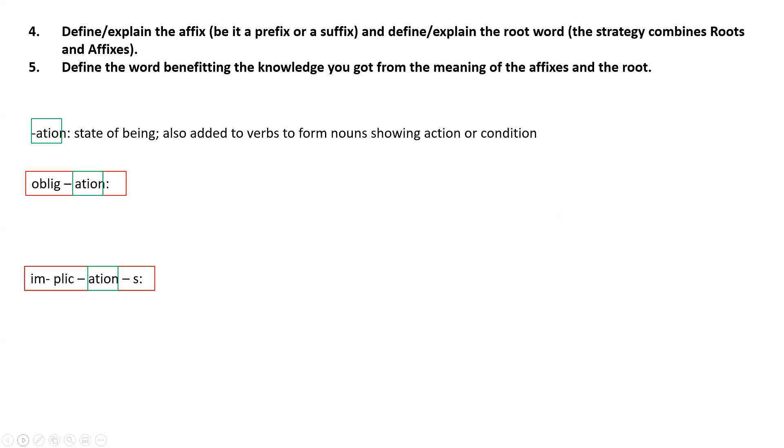So for obligation and implication I use this -ation suffix, and I found that it means state of being or is also added to verbs to form nouns showing action or condition. So let's start with obligation. Obligation has also the root which is oblige, and oblige means to bind by oath. So the meaning would be that the word is related to condition that one has to obey one's duty, and it does make sense.